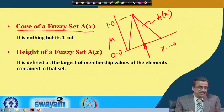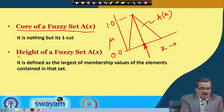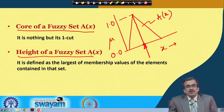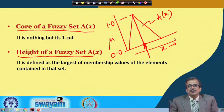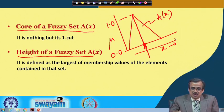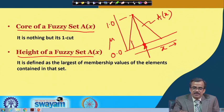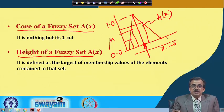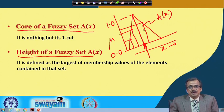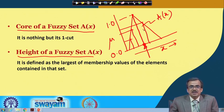Now I am going to define another term called the height of a fuzzy set. Corresponding to the different values of the variable x, I can find out what should be the value for mu. For another value of x, what should be the value for mu? Corresponding to the different values of x, I can find out what the membership function values are, and out of all the membership function values, we try to find out the largest one.